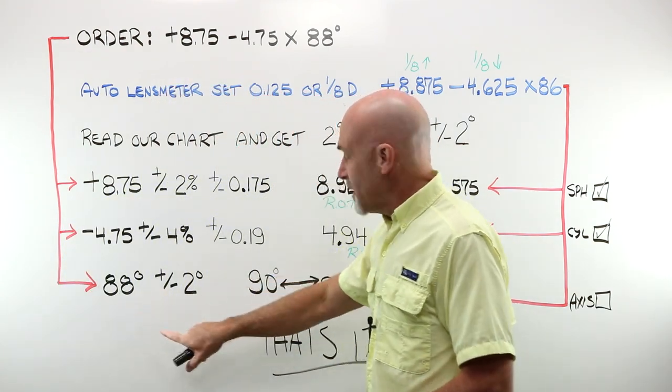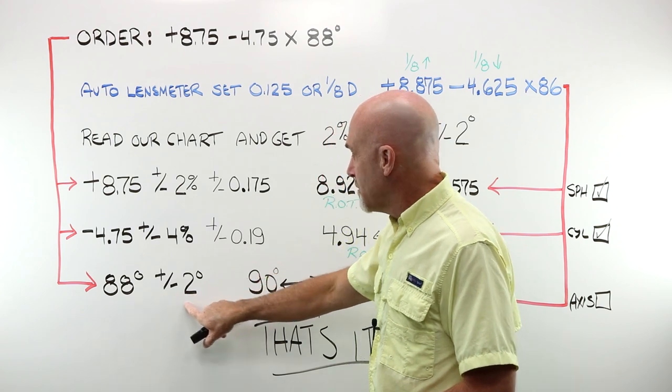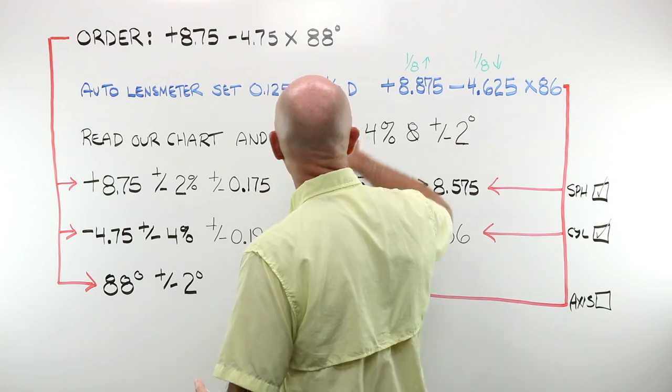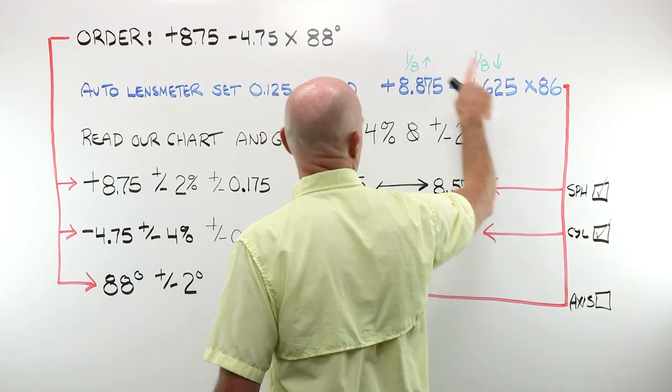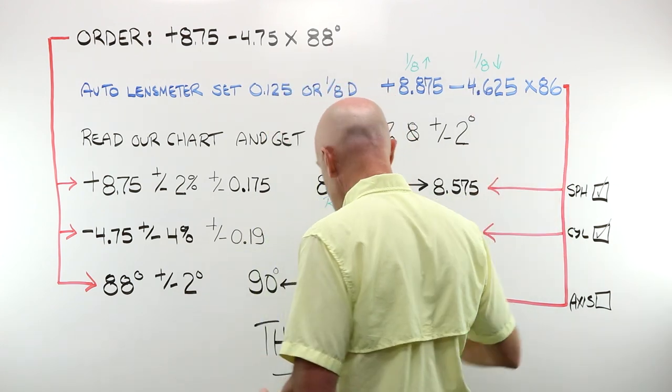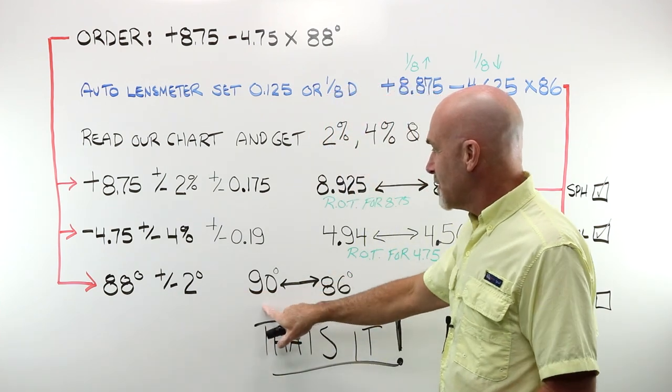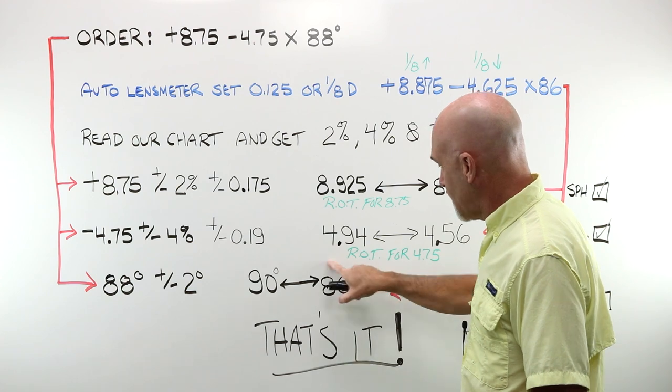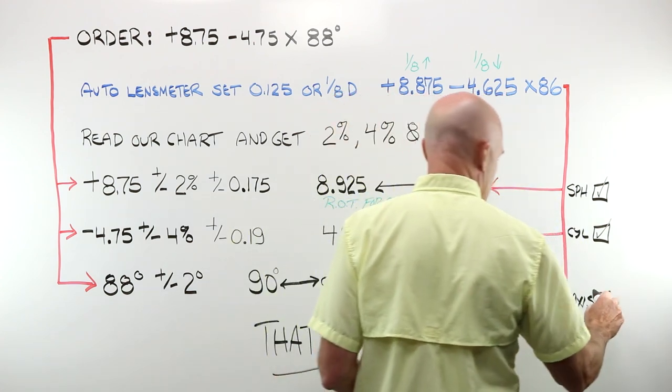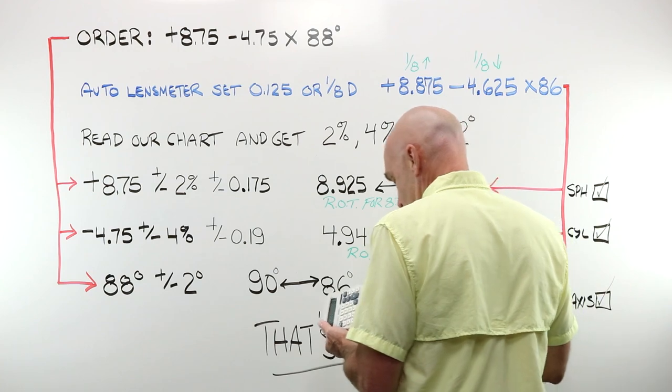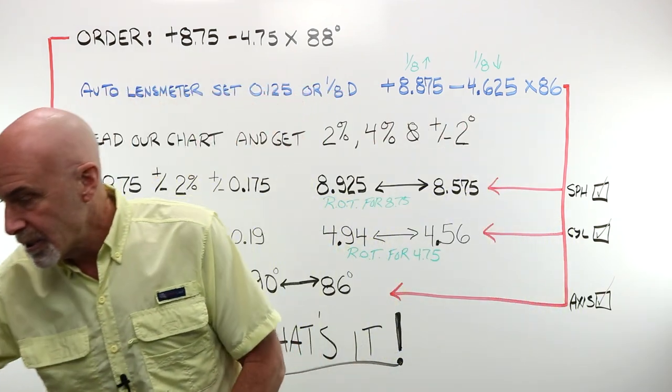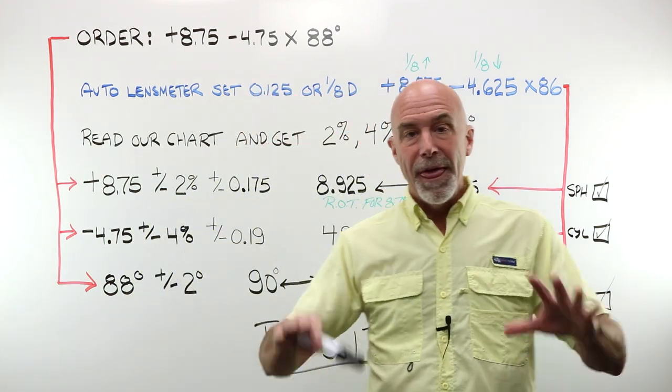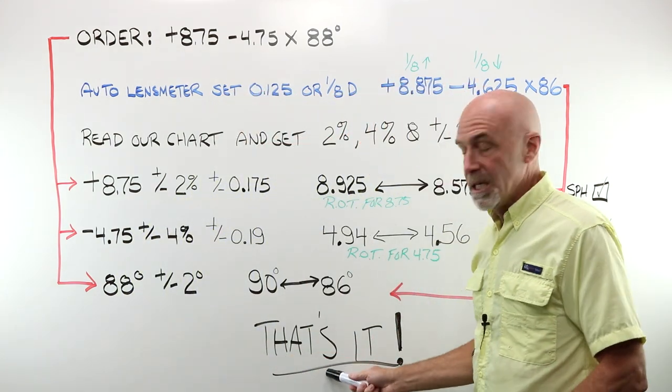I am told that my axis can vary as much as plus or minus 2 degrees. What do I have? I wanted 88. What do I have? 86. My range, 88 plus 2, 90. 88 minus 2, 86. There is my 86. I am good. This job would pass. I could call up my customer and say, hey, come on in, pick up your glasses.